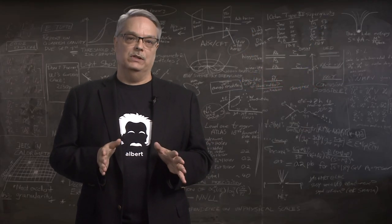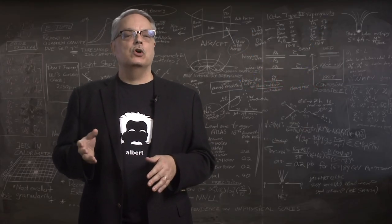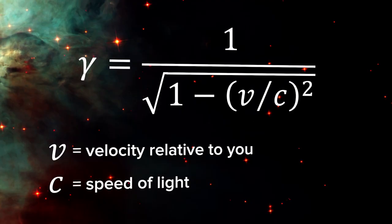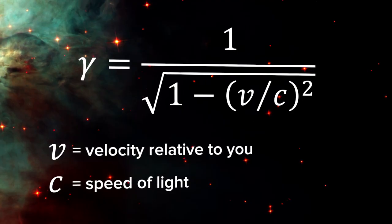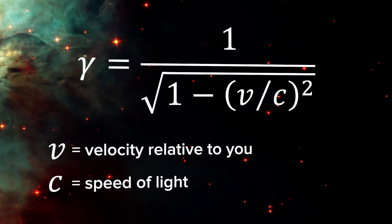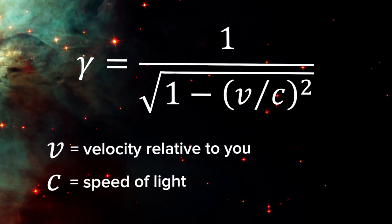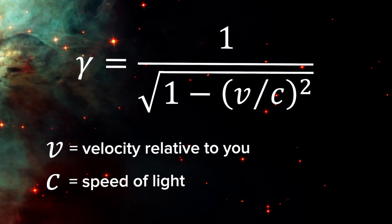However, I can give you the high points. Gamma is a term that is ubiquitous in relativity. It is defined as 1 over the square root of the quantity 1 minus v squared divided by c squared. V is an object's velocity relative to u, and c is the speed of light.